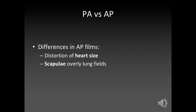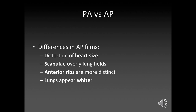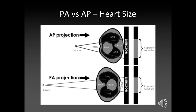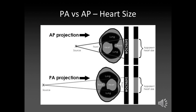The other thing is that the scapulae lie over the lung fields on an AP film because when they take an AP film the patient doesn't hug the detector, so the scapulae don't move out of the way. The anterior ribs are more distinct because the beam is coming from the front — it's like if you hold something closer to a light, you'll get a stronger shadow. And the lungs will appear whiter. In the AP projection, the heart is closer to the source, so you actually get a bigger apparent size of the heart — again, like something closer to a light casting a larger shadow.